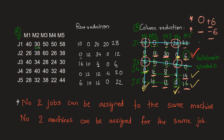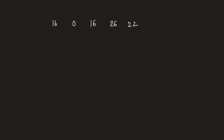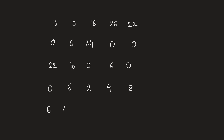Writing out the new matrix after performing these operations: Row 1: 16, 0, 16, 26, 22. Row 2: 0, 6, 24, 0, 0. Row 3: 22, 10, 0, 6, 0. Row 4: 0, 6, 2, 4, 8. Row 5: 6, 4, 6, 0, 10. You can pause the video and cross-check your matrix.